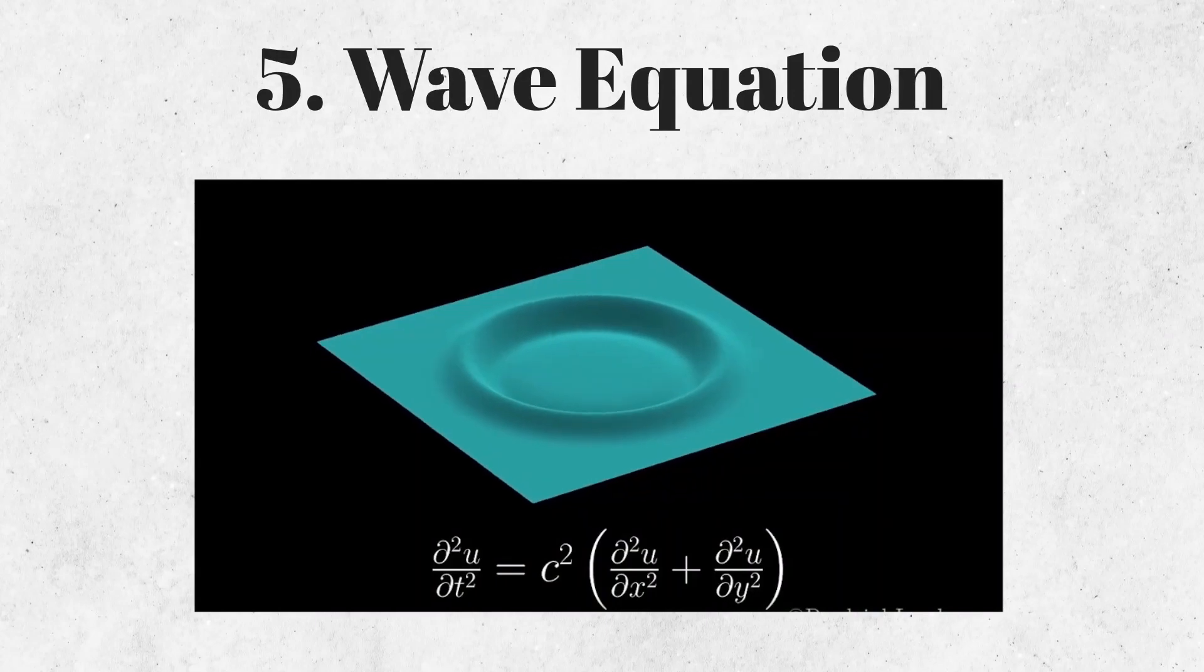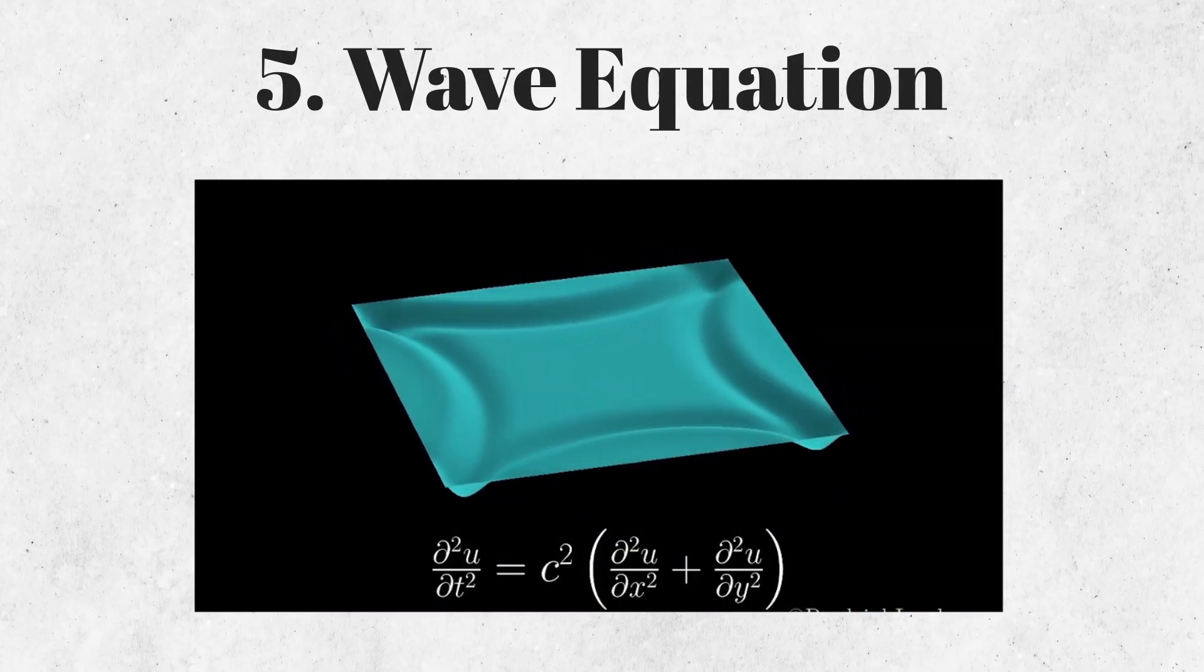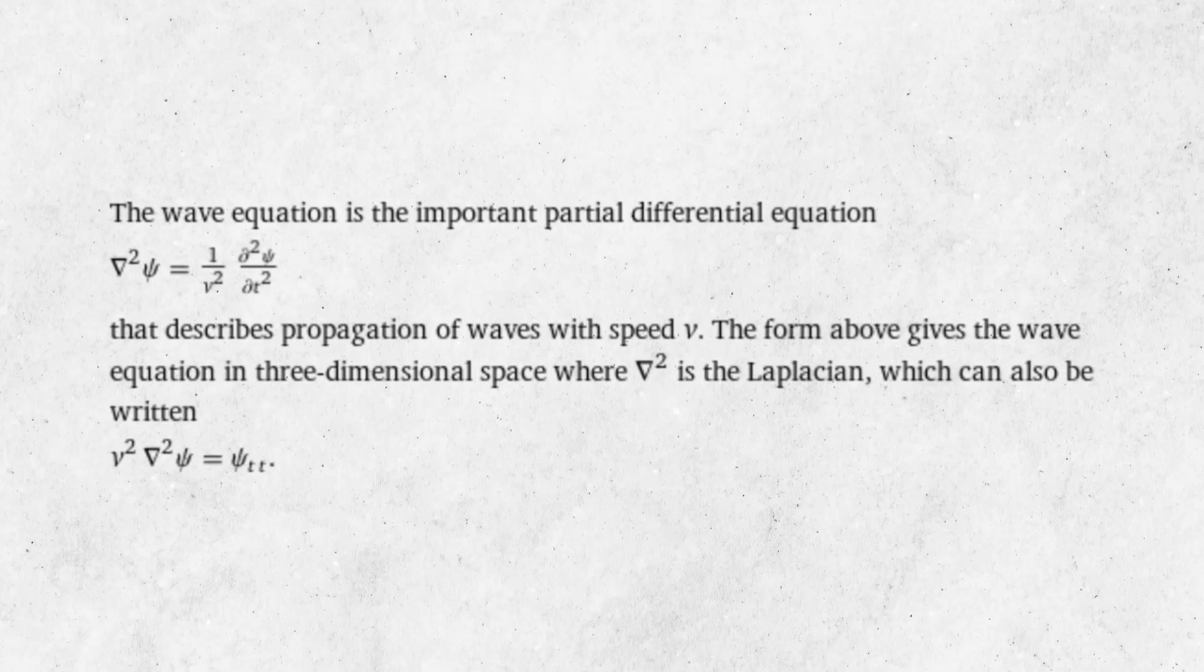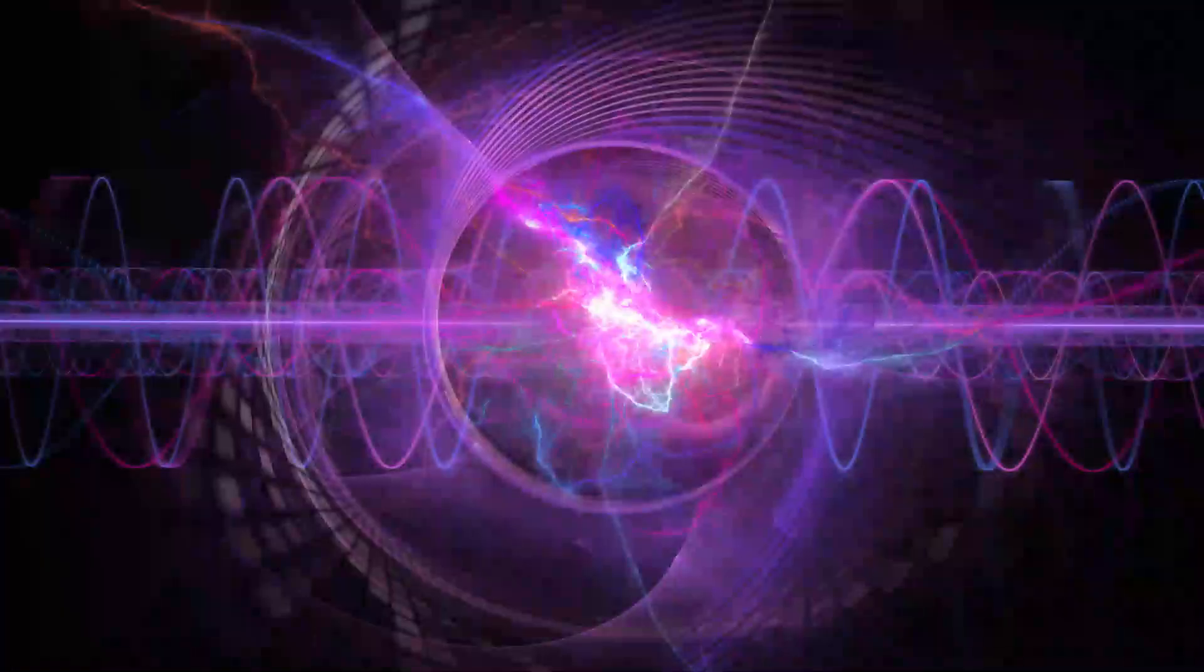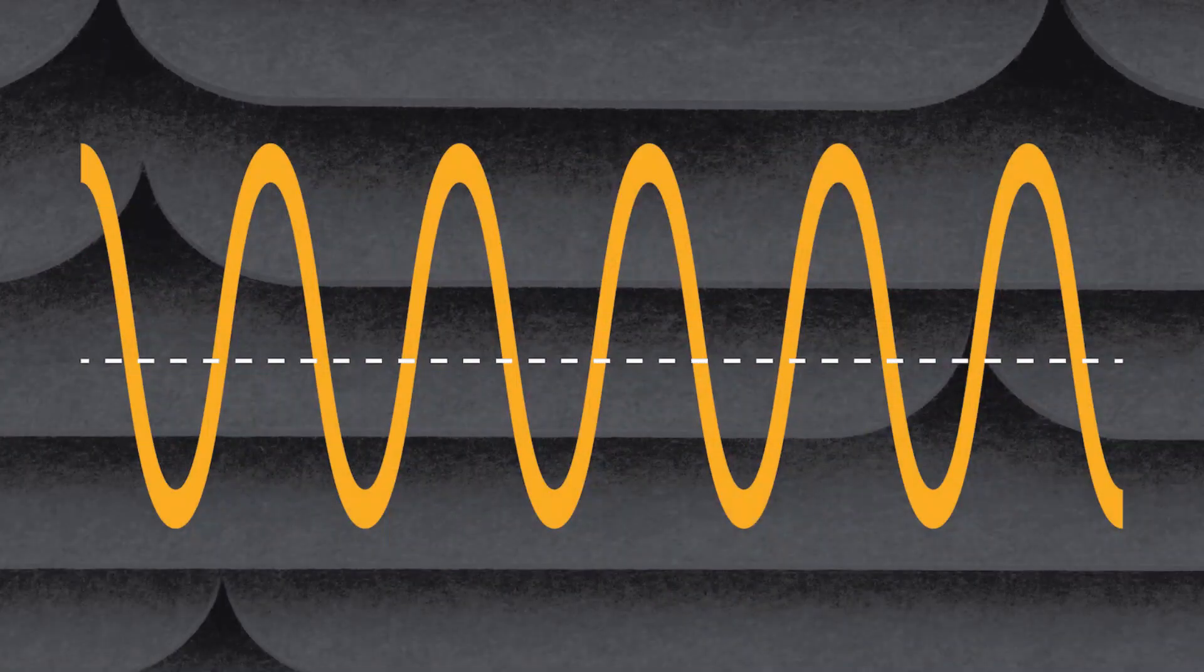The wave equation, as its name suggests, is used to describe the behavior of wave patterns. This equation is used in many areas of physics, such as electromagnetism, acoustics, and optics.